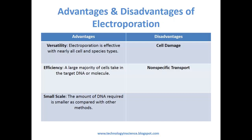Advantages of electroporation: Versatility — electroporation is effective with nearly all cell and species types. Efficiency — a large majority of cells take in the target DNA or molecule. Small scale — the amount of DNA required is smaller compared with other methods. Disadvantages: Cell damage — if electric pulses are given for too long or with more intensity, some pores may become too large or fail to close after membrane discharge, causing cell damage or rupture. Nonspecific transport — the transport of material into and out of the cell during electropermeability is relatively nonspecific, which may result in an ion imbalance leading to improper cell function and cell death.